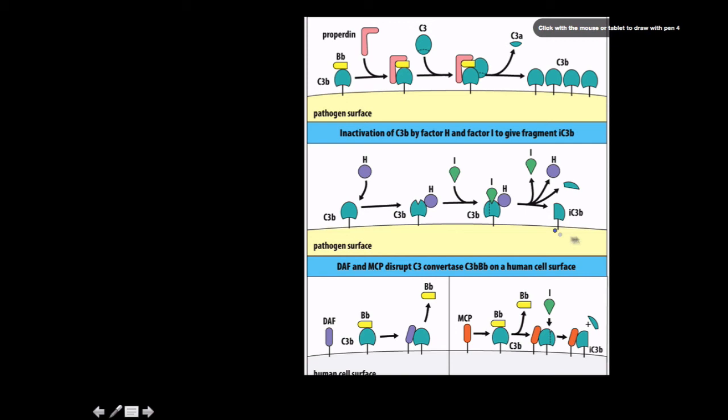But if this was, say, on one of my cells, this IC3 beta was going to be further broken down. This is here showing on a human cell surface, basically the decay accelerating factor binding to the C3 beta fragment there and causing conformational change that's going to release the factor B beta subunit.